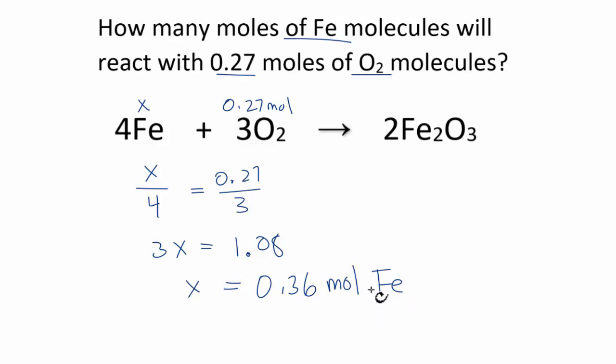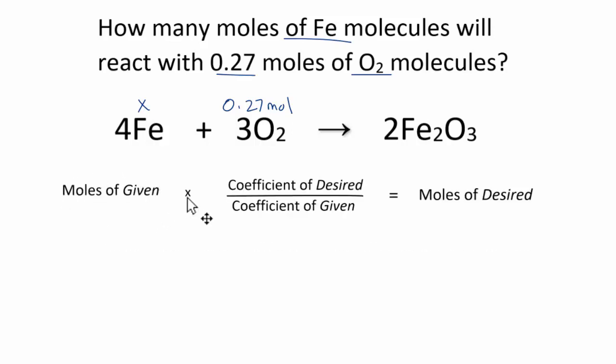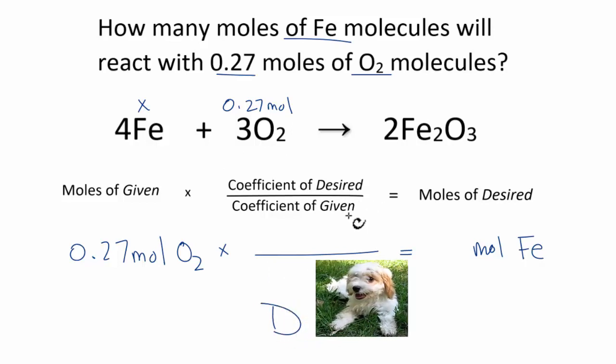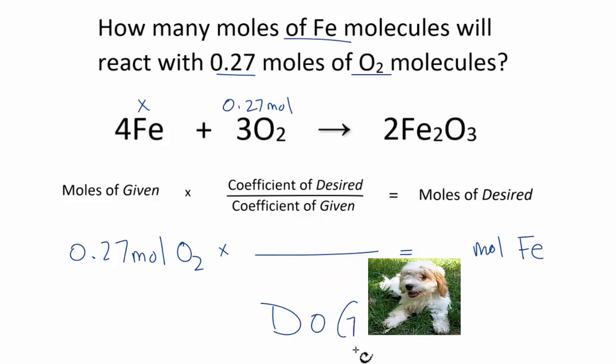There's another way we should do it, though, and this is often preferred by teachers. It's the same thing. We're using a mole ratio, but now we're treating it as a conversion factor. And to do that, we can use this equation here. So we take what we're given and multiply it by our mole ratio here to figure out what we're looking for. So let's write some numbers in. We're given 0.27 moles of oxygen. We multiply that by our mole ratio, and then we'll figure out what we're looking for. And we're looking for moles of iron.